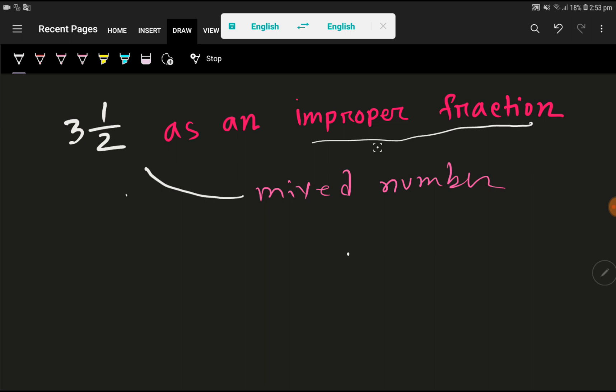An improper fraction is a fraction in which the numerator is greater than the denominator. So to convert this mixed number to an improper fraction, at first we have to... You know that a mixed number has a whole number part and a fraction part.